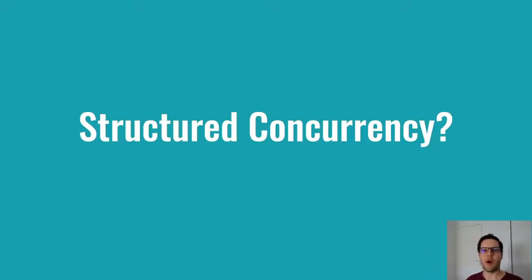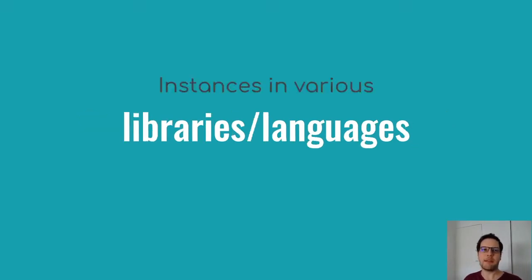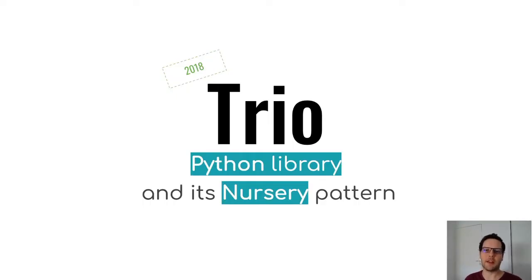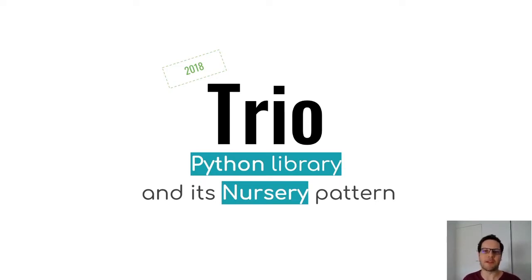But first, what is structured concurrency and where does it originate from? There are instances of it in several languages and libraries now, but it originates in Python, in a library called Trio back in 2018. And Trio has a class called nursery — the nursery pattern — which is the original implementation of structured concurrency.